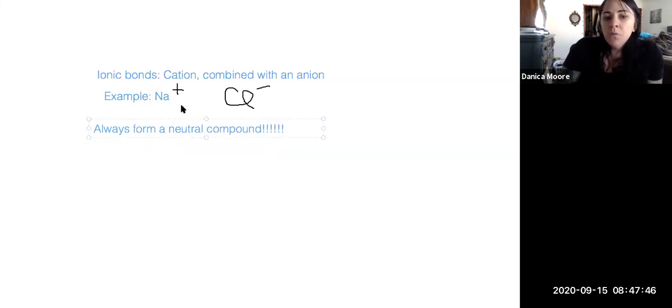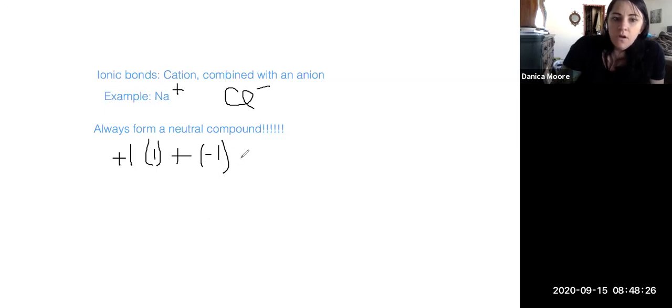So what we're saying when we say we want a neutral compound is when we hook these guys up, we want to make sure that we have enough of each to make a neutral compound. So if I have a positive one charge from sodium, I have plus one from my one sodium ion. And I add that to, let's say we start off with one chloride ion. That would be a negative one charge. And we have one of them.